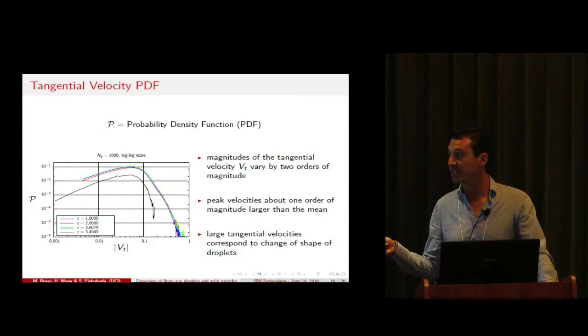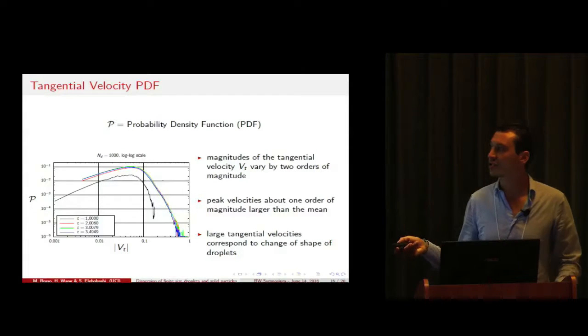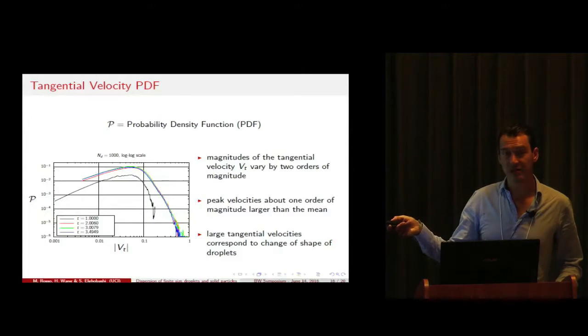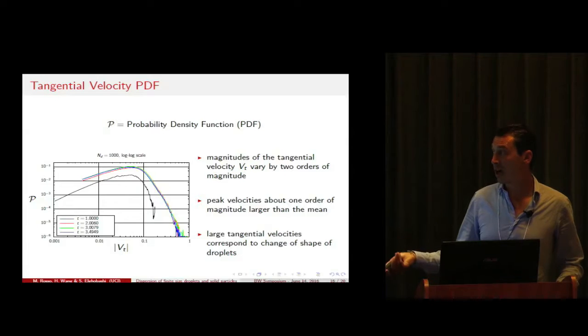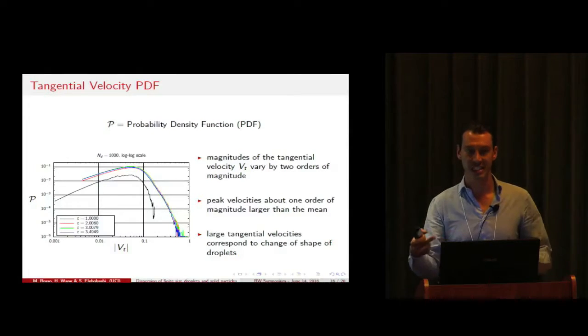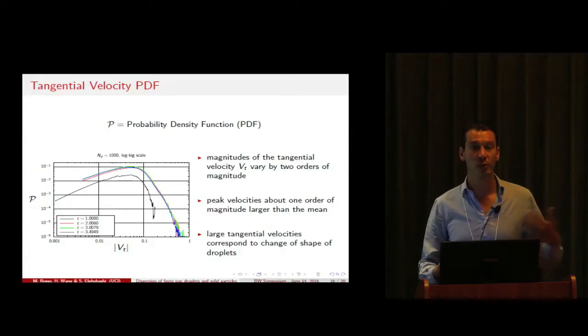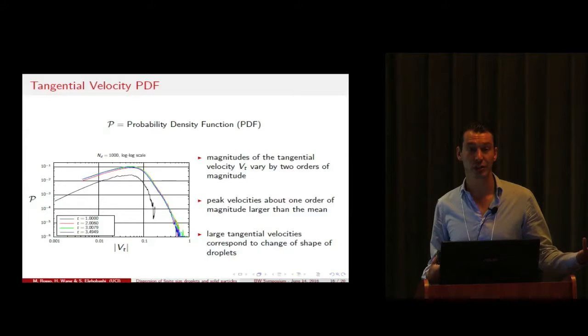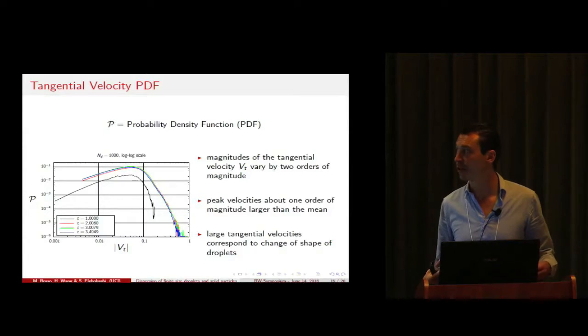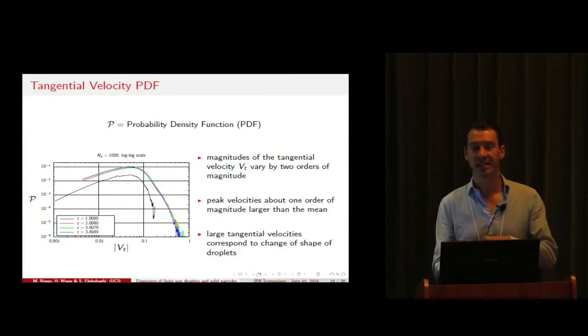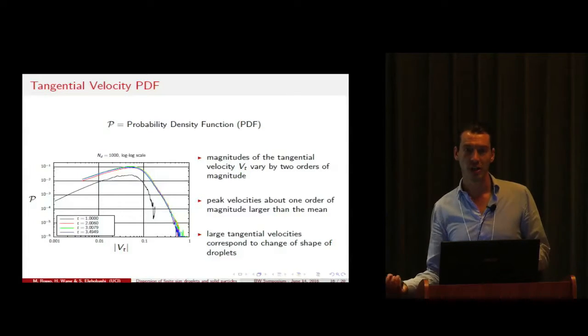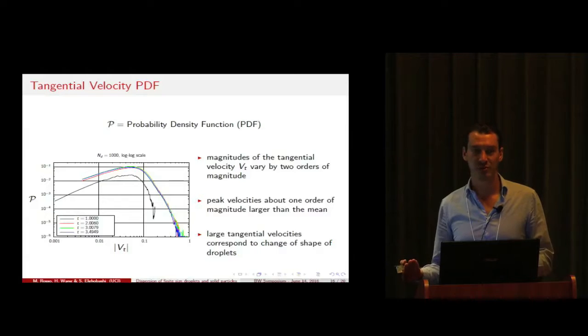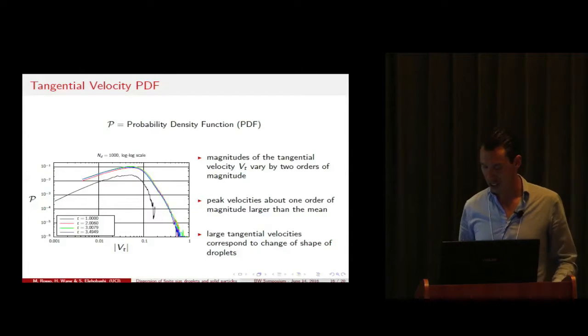In order to verify this, we plotted the probability density function of the tangential velocity. We have peak values that are one order of magnitude larger than the mean values and that are responsible for increased rotational velocity compared to the case of solid particles that keep being spherical. We believe that this increased rotational kinetic energy is transferred to the flow and therefore responsible for the slowdown of turbulent kinetic energy in time.